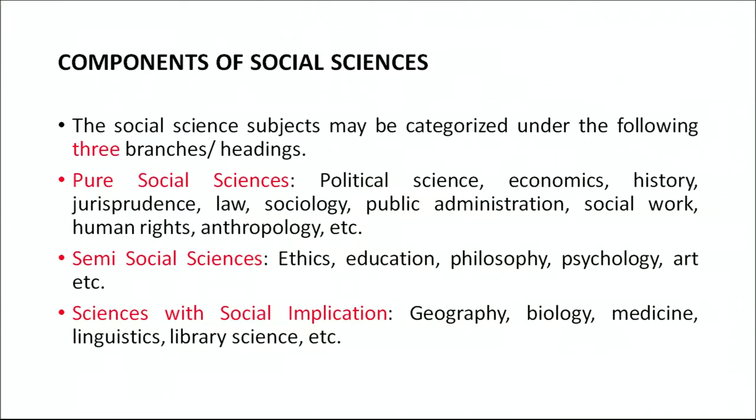The second category is semi-social sciences. Examples are ethics, education, philosophy, psychology, art, etc. These subjects also deal with human beings and how human beings behave in a social system, facilitating human life in a social system. But at the same time their linkage with social sciences is not as visible or as solid as the pure social sciences. Hence, we call these subjects semi-social sciences.